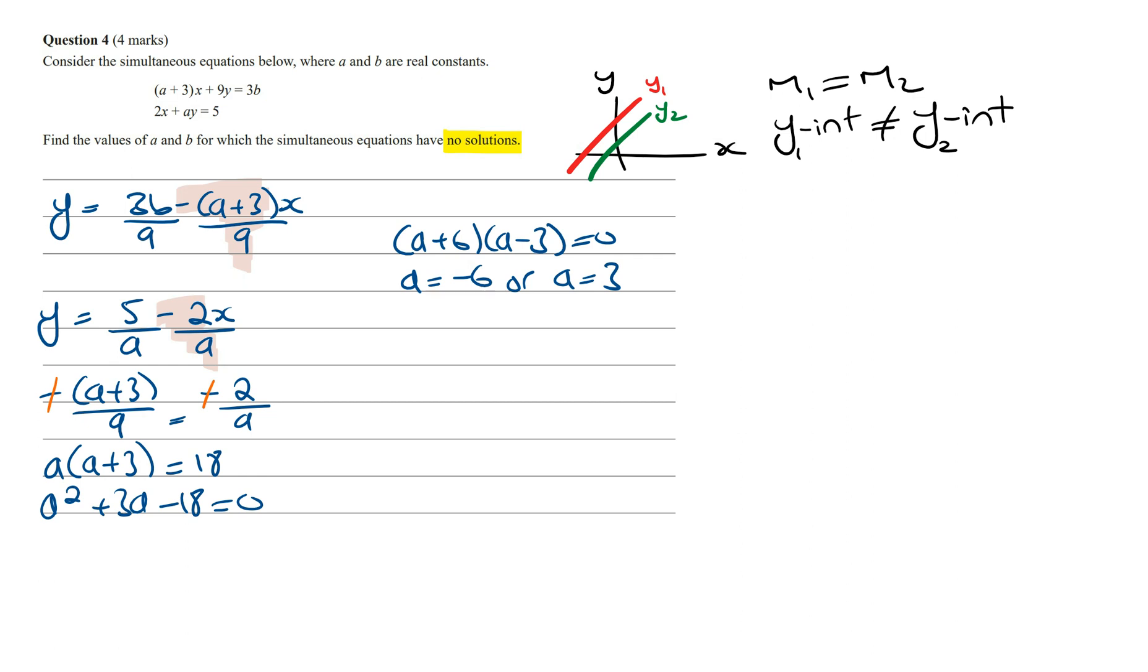From here what we need to do is equate the Y-intercepts, which is these two constants, and to make sure that they are not equal. And so if we let A is equal to minus 6, then the Y-intercepts are going to be 3B over 9 is equal to 5 over minus 6. Solving for B, this is going to become minus 5 on 6 multiplied by 9 over 3. And so this will become a 1, this will become a 3, and this will cancel out to be 1, and this will become a 2. And so the value of B is going to equal minus 5 on 2.